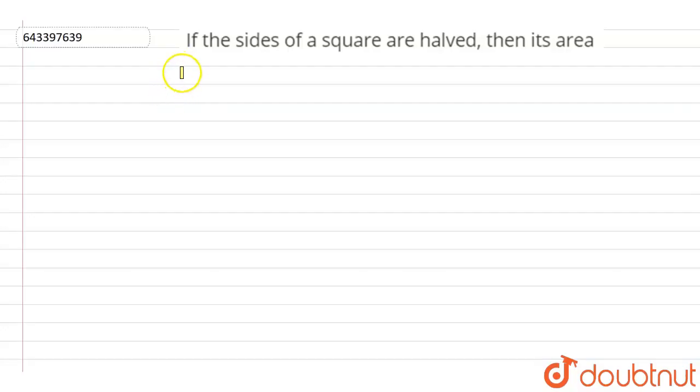Hello everyone, let us start the question. The question says if the sides of a square are halved then its area. So here one square is given.